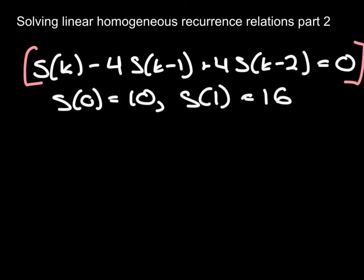since this is order 2, is going to be a² - 4a + 4 = 0, and the hope here is that by converting the recurrence relation into easy algebra we should be able to do the algebra and then use the results.